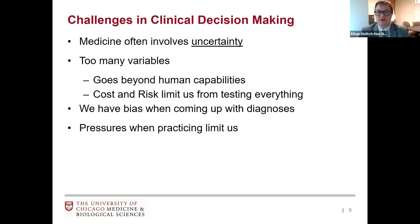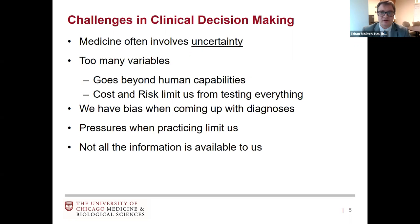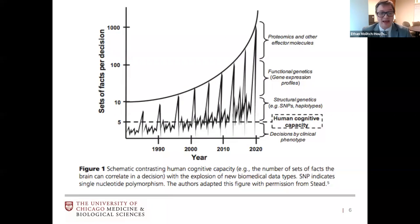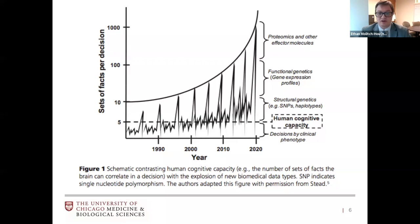We have so many pressures that limit us, and we don't always have all the information about the patient in front of us. Our human cognitive capacity faces a sheer number of variables for every decision we make. As medicine has advanced — including genetics, proteomics, and gene expression that influences drug response or disease likelihood — all these factors logarithmically expand beyond what our human capacity can truly comprehend.